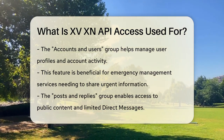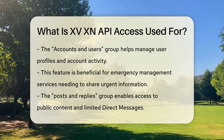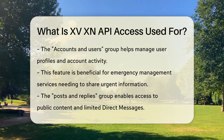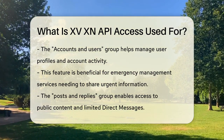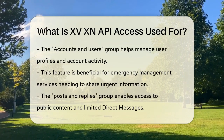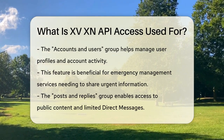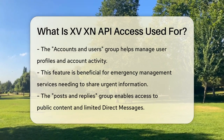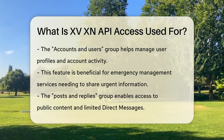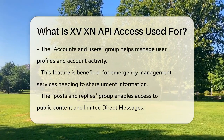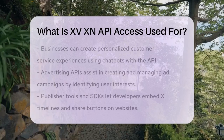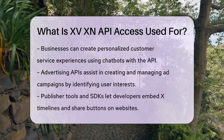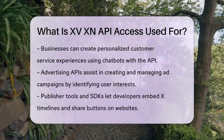The Posts and Replies group allows developers to access and post public content on X. For example, a developer could create an app that helps users find posts related to a specific topic or event. Additionally, the API provides limited access to direct messages, enabling businesses to create personalized customer service experiences using chatbots or human agents.